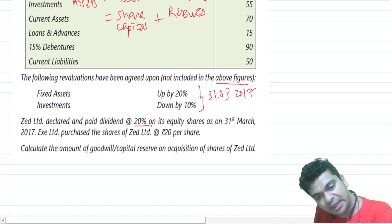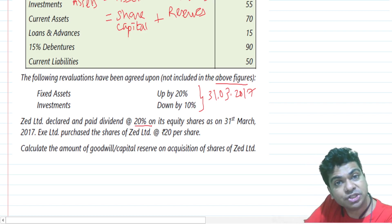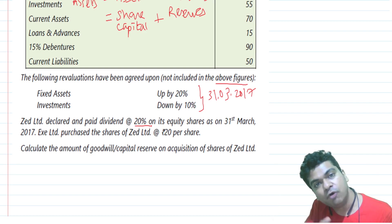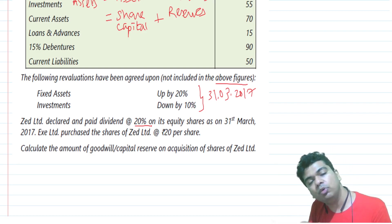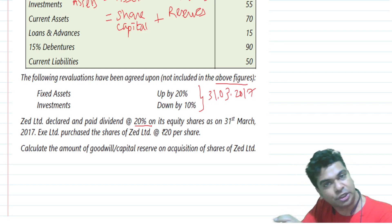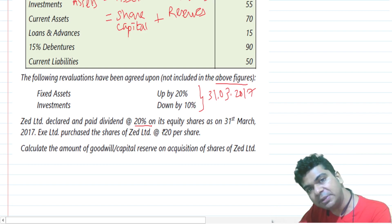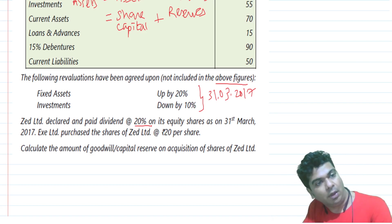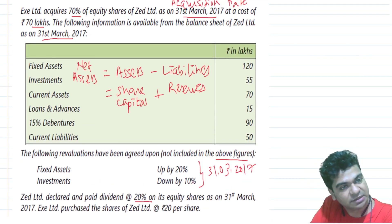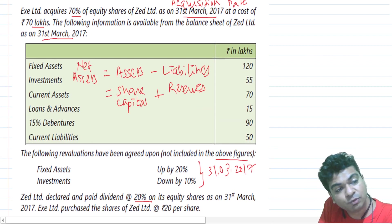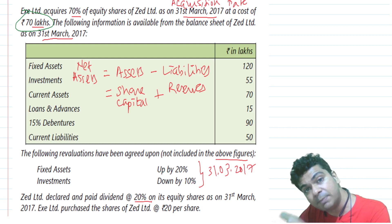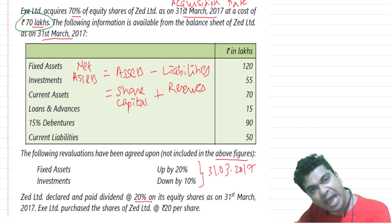Z-Limited declared and paid a dividend at the rate of 20% on equity shares on 31st March 2017 — the same date we are acquiring shares — so this dividend is for the pre-acquisition period. As per Accounting Standard 13, any pre-acquisition dividend received cannot be credited to the P&L. Such dividend is a recovery of cost and should be credited to the investment account. Therefore, the cost of acquisition of ₹70 lakhs should be reduced by the pre-acquisition dividend received.